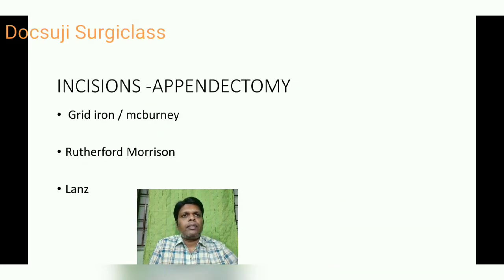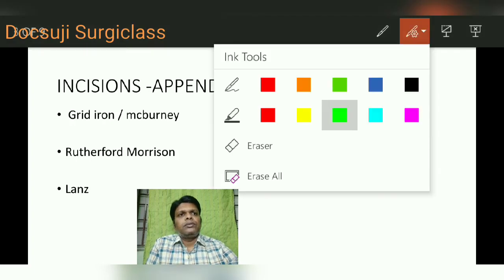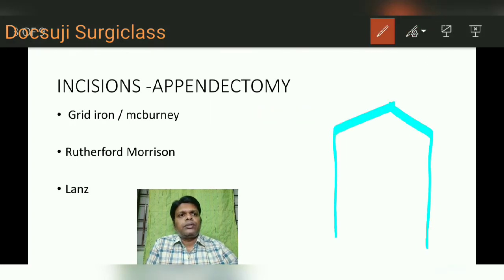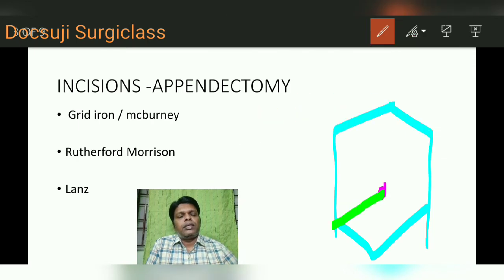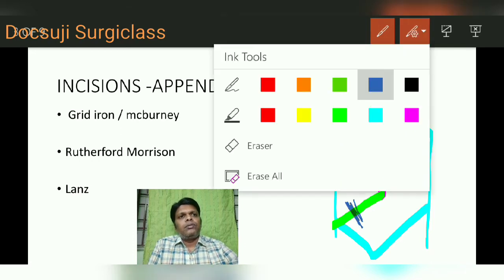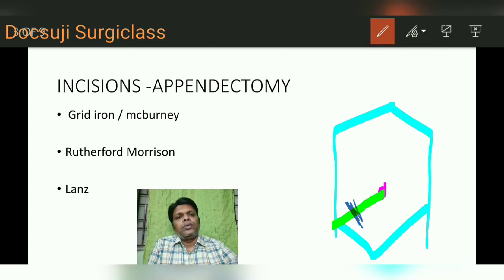In appendicectomy there are three incisions. Number one is the grid iron incision. First you should know the basic anatomy: this line connecting the anterior superior iliac spine and the umbilicus is called the spino-umbilical line. At the junction of the medial two-thirds and lateral one-third of this line is McBurney's point. The grid iron or McBurney's incision is made through McBurney's point perpendicular to the spino-umbilical line.